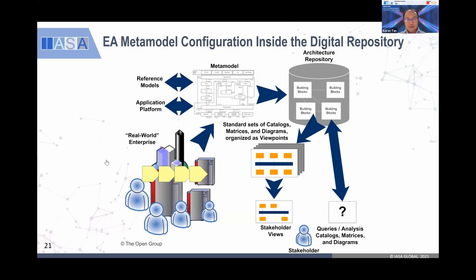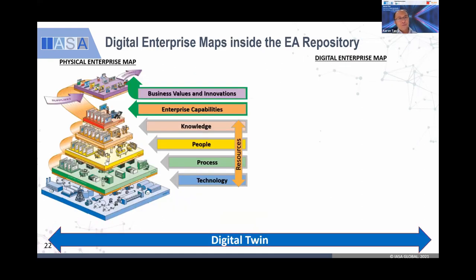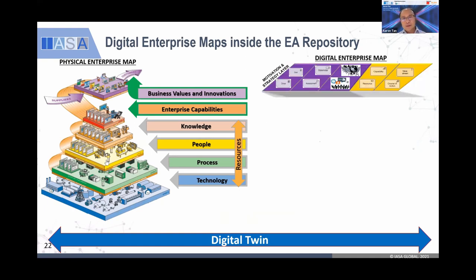Once you populate the repository, at the bottom right is where you can access the benefits of the digital EA — you get feedback on your transformation, impact analysis, and you can become the intelligent source of enterprise information. The left-hand side is where you have the physical enterprise — the enterprise has people, processes, and all the capabilities. The digital EA is actually modeling a digital enterprise map.